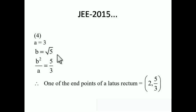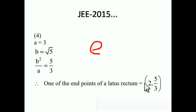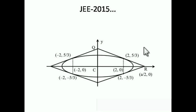The endpoints of the latus rectum are at (±ae, ±b²/a). We need to find the eccentricity e using the formula b² = a²(1 − e²). Using that, we get e, and since we have a, we can find the endpoints. One endpoint of the latus rectum is (ae, b²/a) = (2, 5/3).